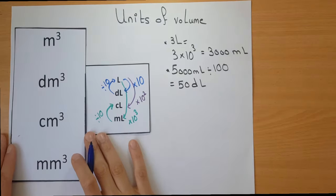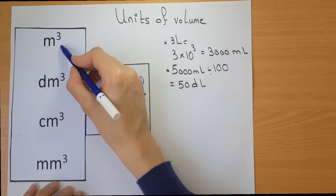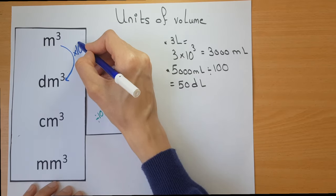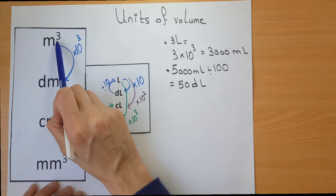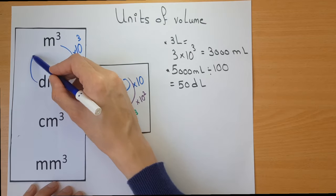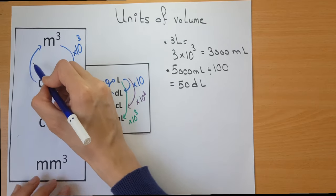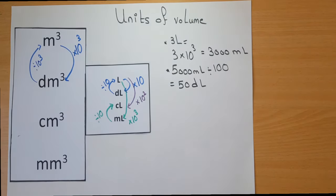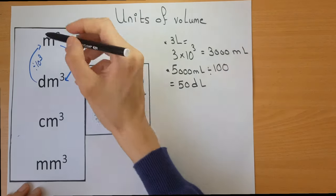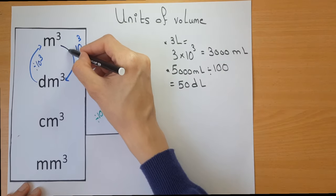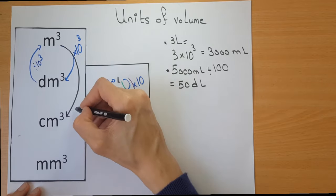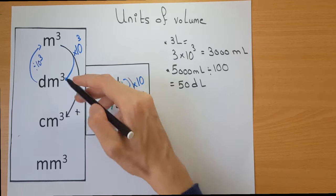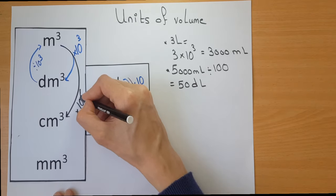Let's move to the cubic meter group. If I want to go one step downwards, I also multiply, but I multiply by 10 to the power of 3, because here we have cube and the exponent is 3. If I want to go up, I divide by 10 to the power of 3. So each step here, we divide or multiply by 10 to the power of 3. For example, to convert from meter cube to centimeter cube — going down two steps — I multiply by 10 to the power of 6.